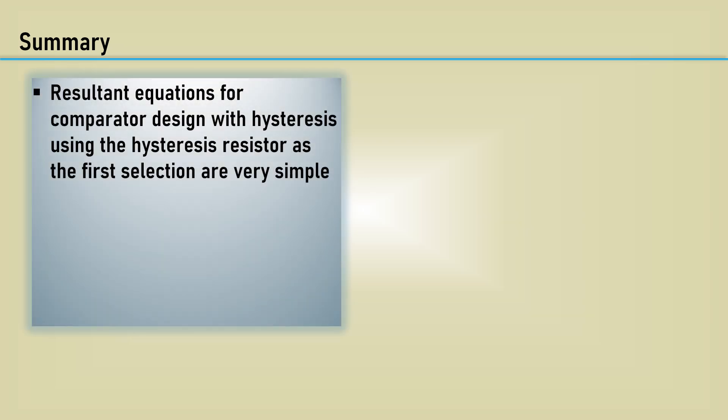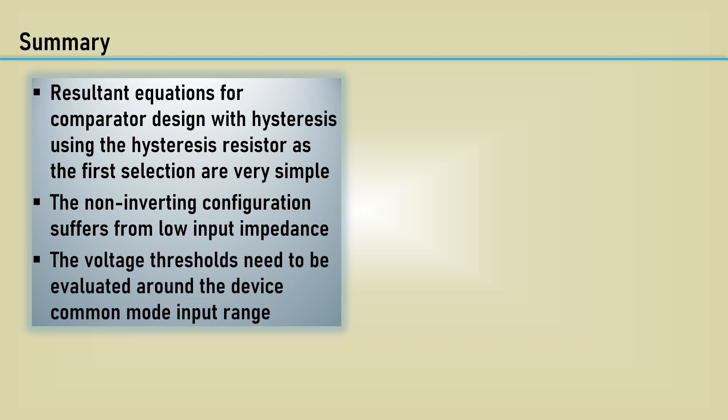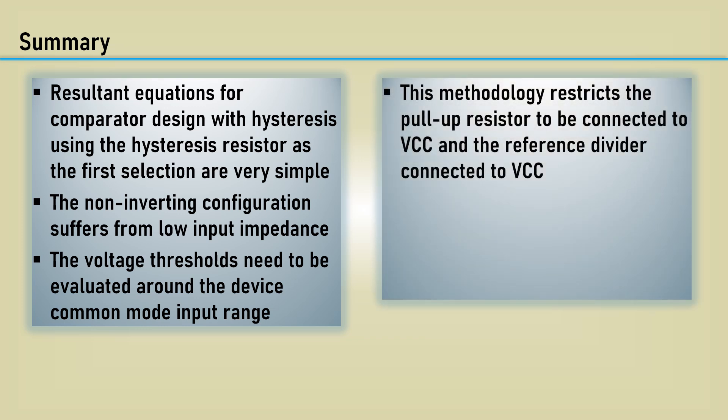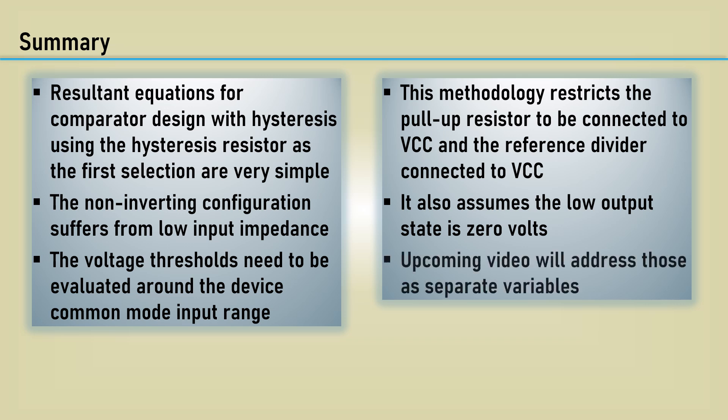Let's summarize. Resulting equations for comparator design with hysteresis using the hysteresis resistor as the first selection are very simple. The non-inverting configuration suffers from low input impedance. The voltage thresholds need to be evaluated around the device common mode input range. This methodology restricts the pull-up resistor to be connected to VCC and the reference divider connected to VCC. It also assumes the low output state is 0 volts. In an upcoming video, we will address these separate variables.